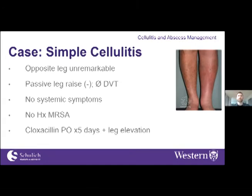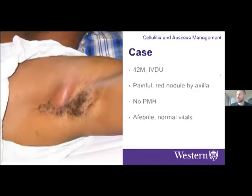Back to Case 1: history reveals a new rash with no recent antibiotic treatment or cellulitis history. The other leg looks normal, no signs of stasis dermatitis or PVD, DVT considered unlikely, no MRSA history, and the patient seems reliable with no concerns for non-compliance. Diagnosis: simple cellulitis. Treatment: oral cloxacillin for five days with leg elevation, good discharge instructions, and follow-up in five to seven days if not improving.